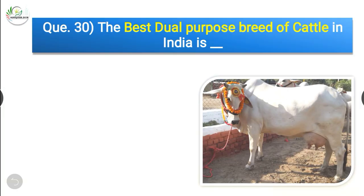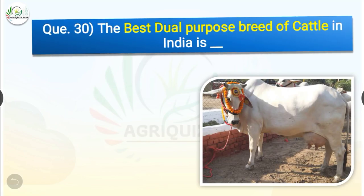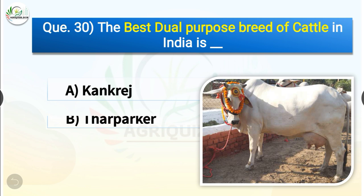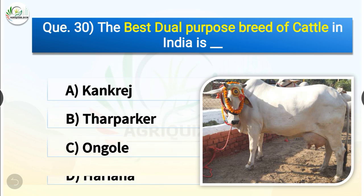Question number 30. The best dual purpose breed of cattle in India is dash. The options are Kankrej, Tharparkar, Ongole or Haryana. The correct answer is option D, Haryana. So the best dual purpose breed of cattle in India is Haryana.